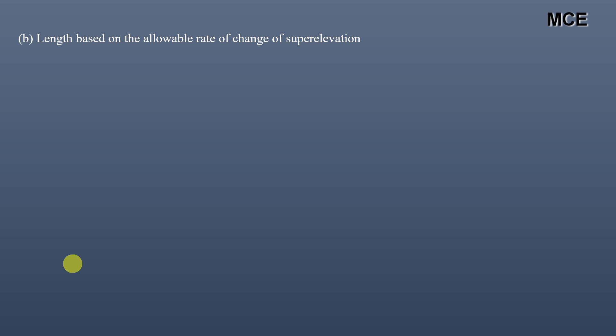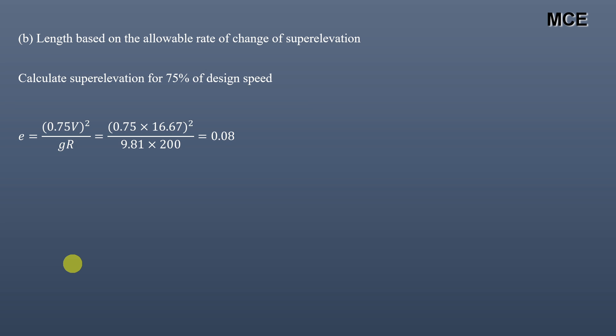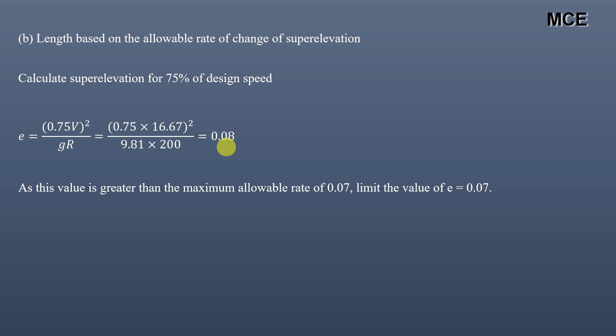Next, we find the length based on the allowable rate of change of super elevation. Since we don't know the super elevation, we calculate it first. According to the IRC, super elevation for 75% of design speed neglecting lateral friction is: e = 0.75V² / (g × R). Substituting V = 16.67 m/s, g = 9.81 m/s², and R = 200 m, we get e = 0.08.